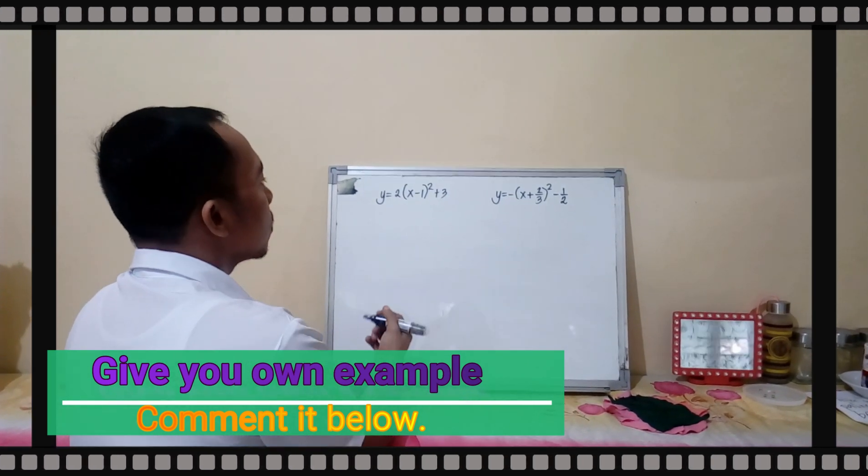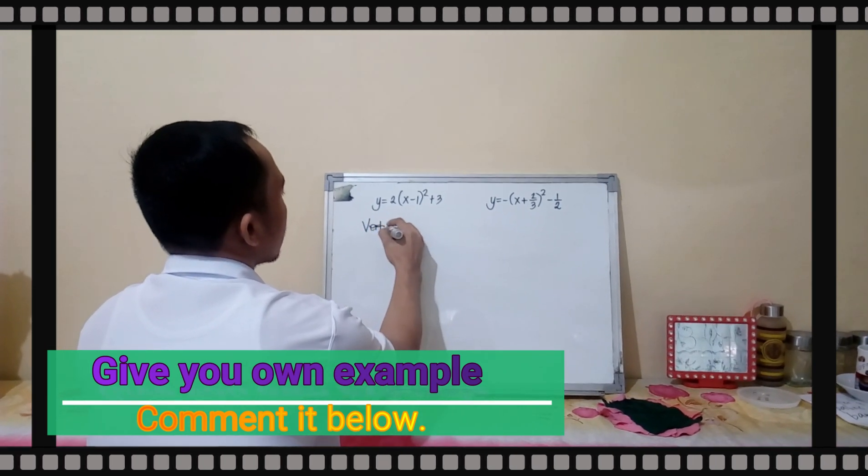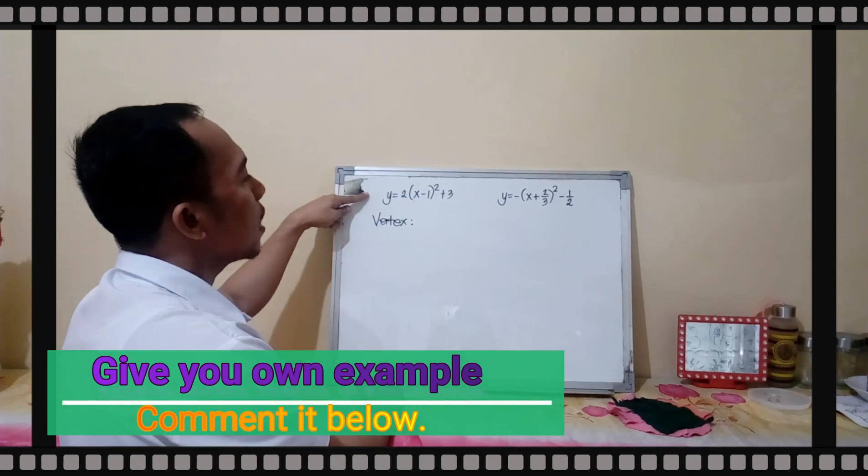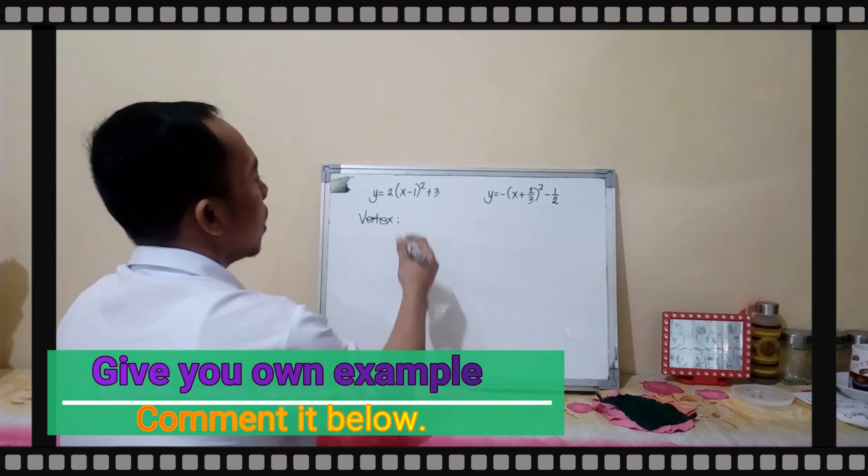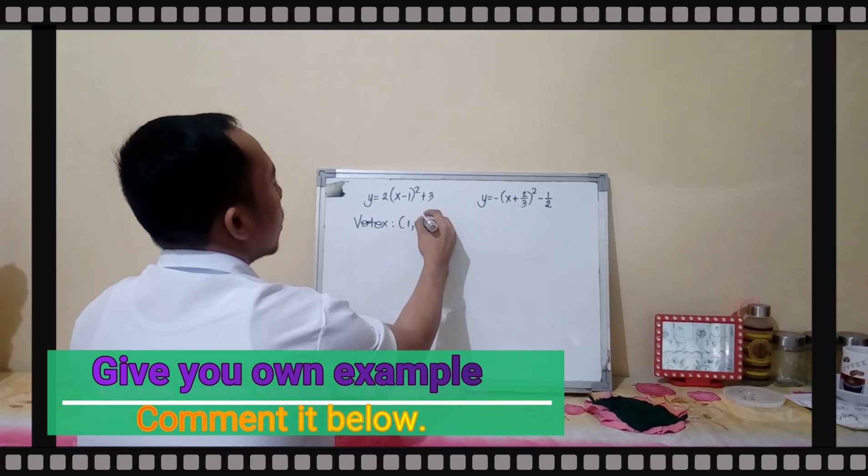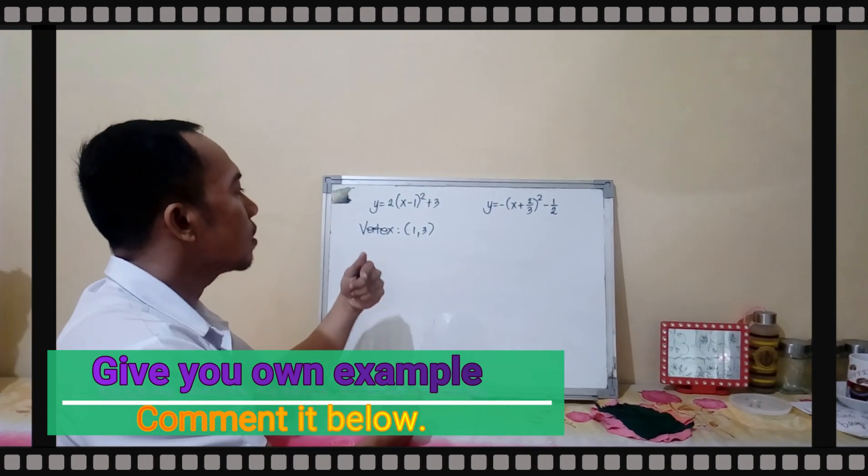We can get here the vertex. The vertex for this quadratic function, you just get the value of h and the value of k. So it is 1, 3. This is now your vertex.